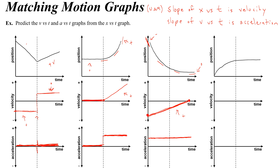This is interesting because when we think of positive acceleration we don't necessarily think of an object that's slowing down, but that's not necessarily true in physics. Acceleration just means the object's velocity is changing. Whether an object is speeding up or slowing down is determined by the direction of the velocity and the direction of the acceleration. Here all the velocities are in the negative quadrant — maybe the object is moving left — and the acceleration is positive, meaning to the right. That doesn't mean it moves right; it just means it's slowing down until it reaches zero and stops.